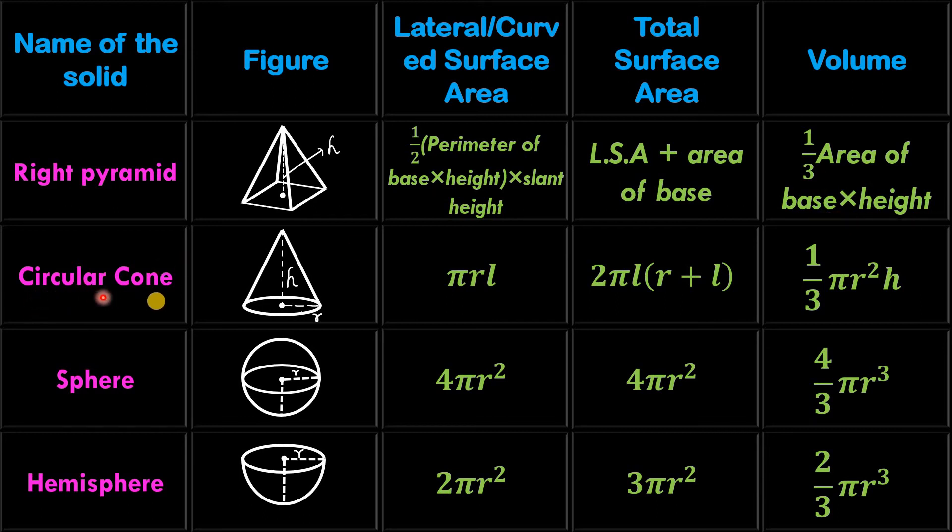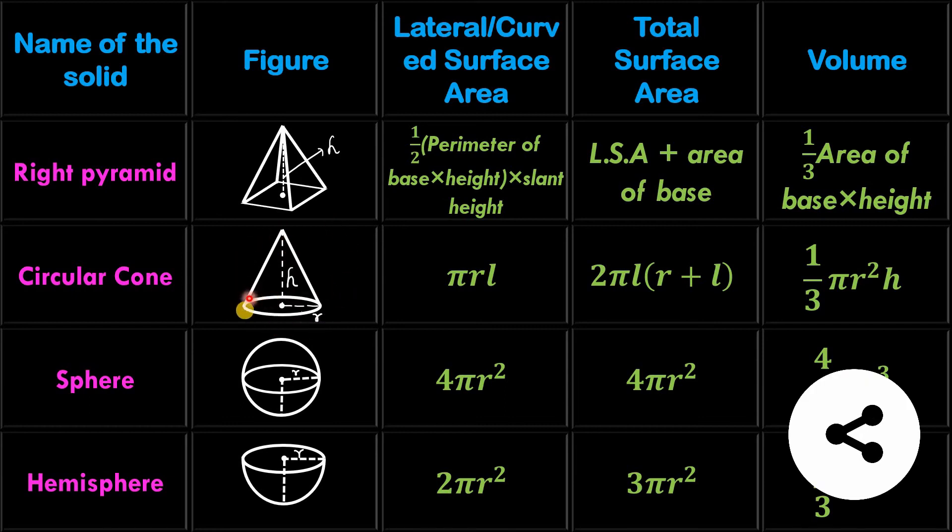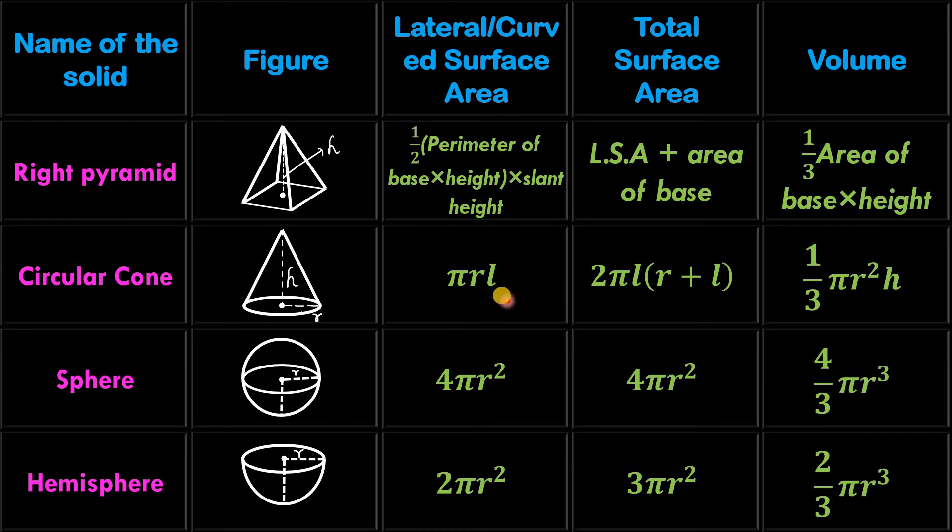This is circular cone. It's a curved shape. Here we consider CSA. That is pi R L. And total surface area is 2 pi L into R plus L. This is the slant height of cone, and this is the height and radius. Its volume is 1 by 3 pi R square H.